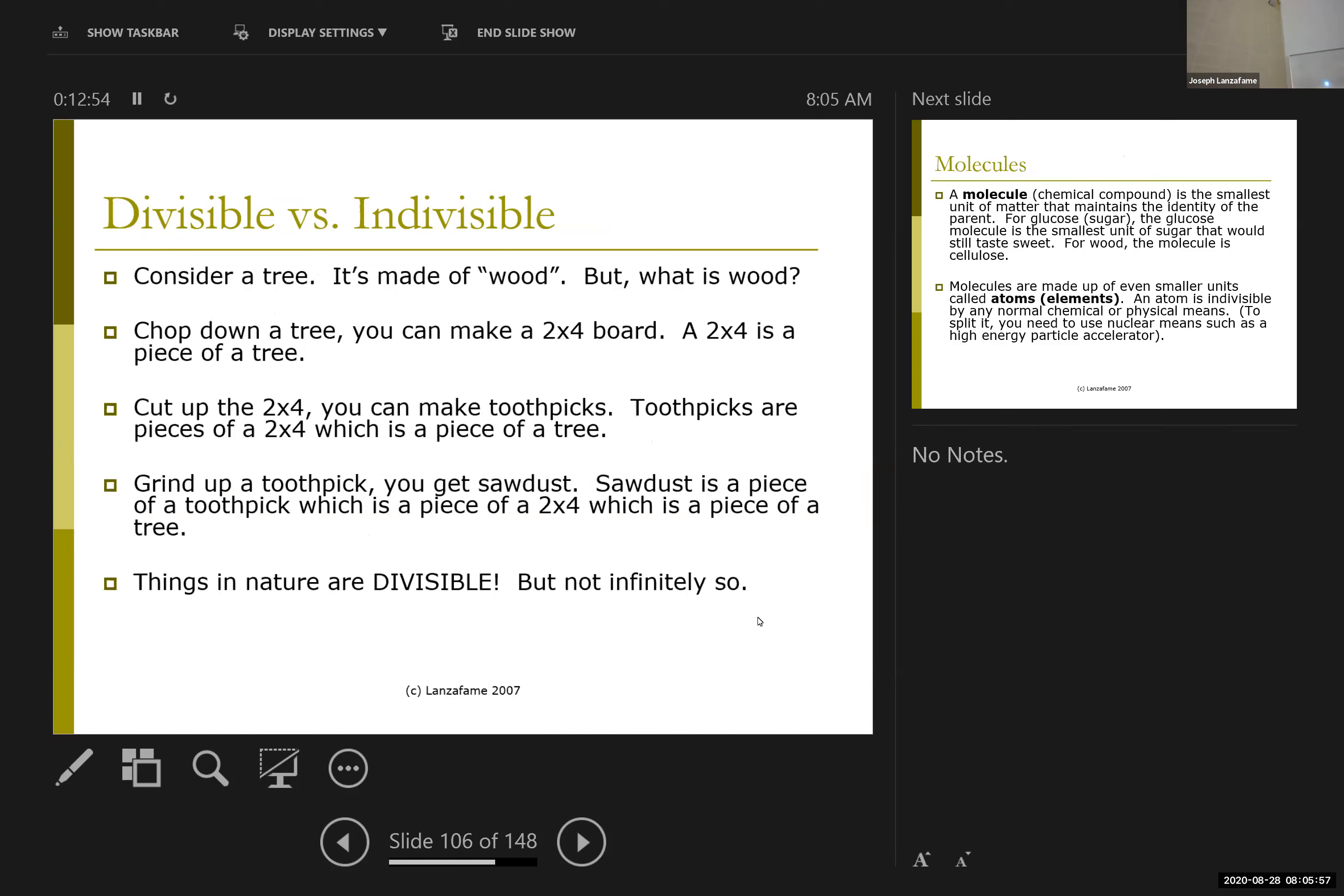If I start with, for example, a tree, trees are made of wood, if you'd like a more chemical term, trees are made of cellulose. I can chop down the tree and cut it into boards, I can take the boards and grind them into sawdust. And what I have is a smaller and smaller version of the tree, without the leaves, and so I still have wood, and it's still cellulose, and as I get smaller and smaller and smaller, I have a divisible substance that remains wood until it gets very, very small.